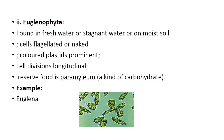Euglenophyta: Found in fresh water, stagnant water, or moist soil. Cells are flagellated and naked with colored plastids. Cell division is longitudinal. Reserve food is paramylum, a kind of carbohydrate. Example: Euglena.